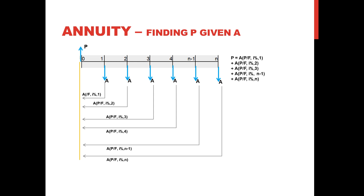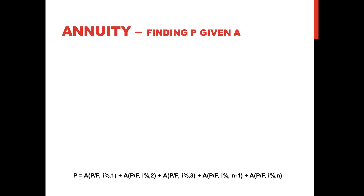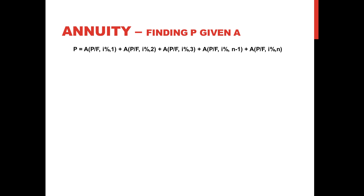We sum all of those notations. We will utilize the single payment present worth factor, which is 1 plus I raised to negative N. Each period will have its corresponding Nth period — so A times (1 + I)^(-1) plus A times (1 + I)^(-2), continuing until the last period N.